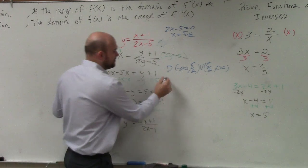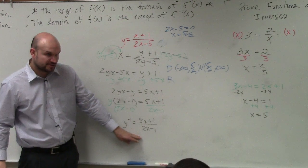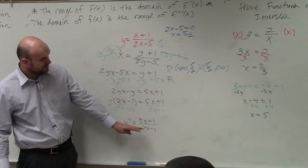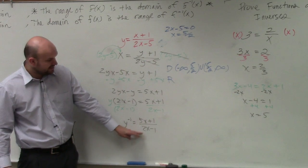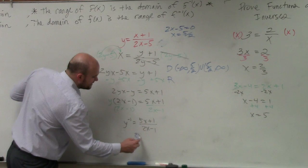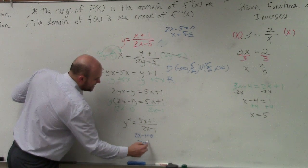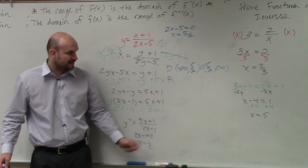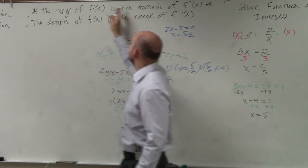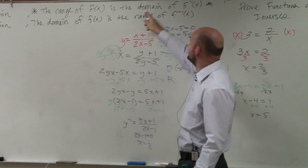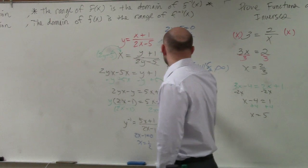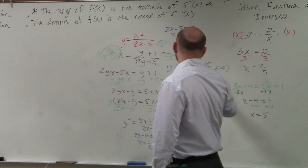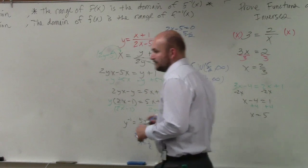Now to find the range, we need to look at the inverse. Here's our inverse function. Let's find the domain of our inverse function. Again, no radicals, just a denominator with a variable. We need to figure out what number makes the denominator equal to 0. Set it equal to 0 and solve. x equals 1 half. So it's all real numbers except for the number 1 half. Well, remember, the domain of the inverse is the range of f(x). So my range is all real numbers except for 1 half. And there's your domain and range.